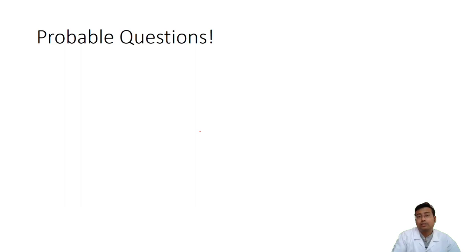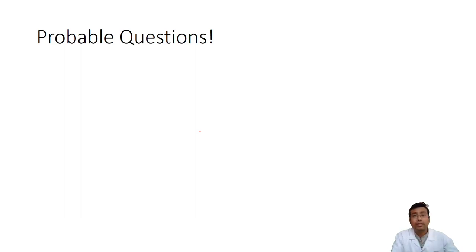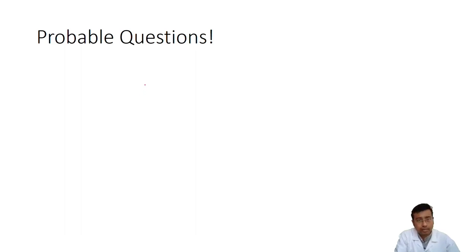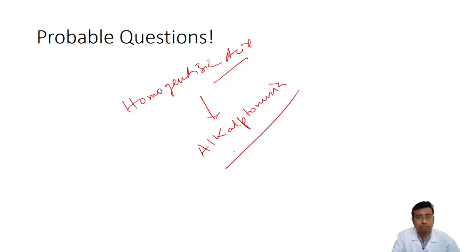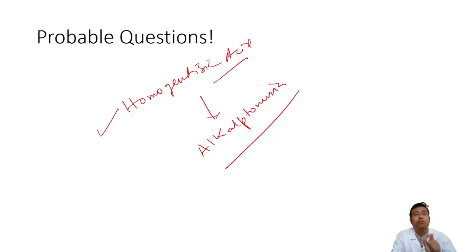The next question the examiner might ask: what can be a non-sugar reducing substance — substances that are not carbohydrates? These would give a negative Molisch test but a positive Benedict's test. Yes, those substances exist: they are ascorbic acid (Vitamin C) and homogentisic acid. Homogentisic acid increases in a disease known as alkaptonuria, which we will discuss in the protein metabolism class. So homogentisic acid and ascorbic acid are examples of non-sugar reducing substances — they are not carbohydrates but will give a positive Benedict's test.